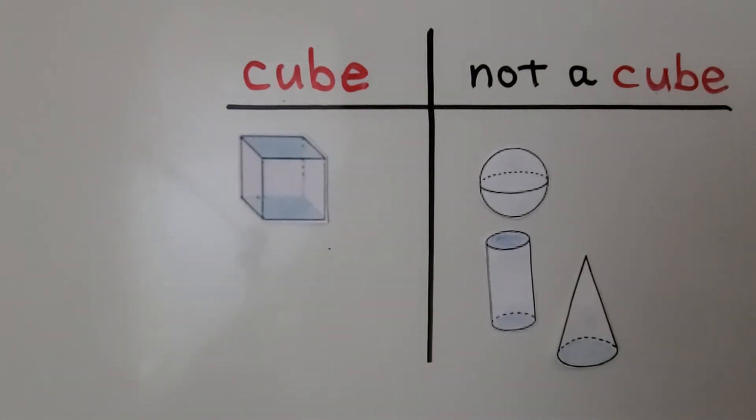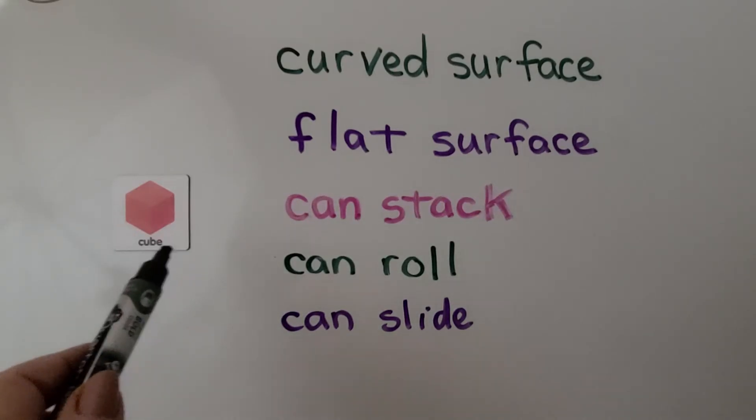That is a cube. All of the sides are shaped like squares and they're all the same size. Here is a cube.